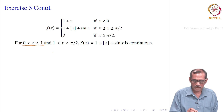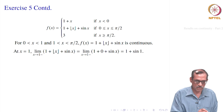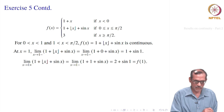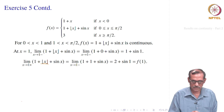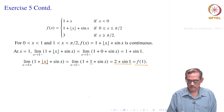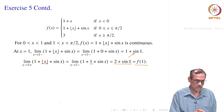For 0 < x < 1 and 1 < x < π/2, f(x) = 1 + ⌊x⌋ + sin x is continuous since the floor function is only discontinuous at integers. So we need to think about x=1. At x=1, the left-hand limit is lim(x→1⁻) (1 + ⌊x⌋ + sin x) = 1 + 0 + sin 1 = 1 + sin 1. The right-hand limit is lim(x→1⁺) (1 + ⌊x⌋ + sin x) = 1 + 1 + sin 1 = 2 + sin 1. The function value f(1) = 1 + 1 + sin 1 = 2 + sin 1. Both limits exist but are different, so the overall limit does not exist at x=1 and the function is not continuous at x=1.